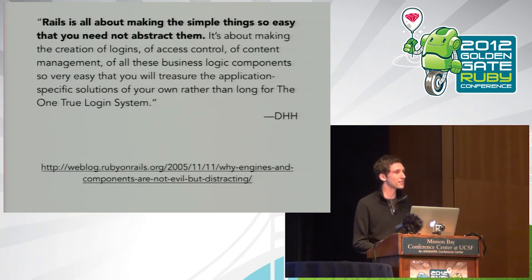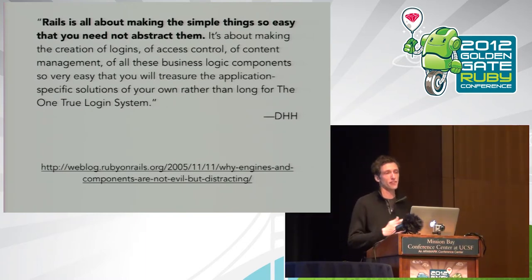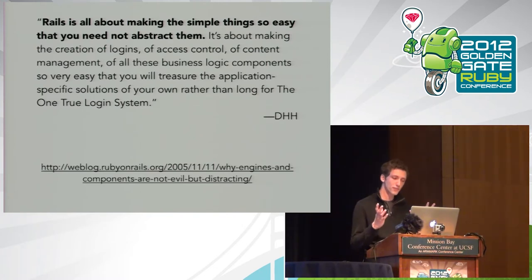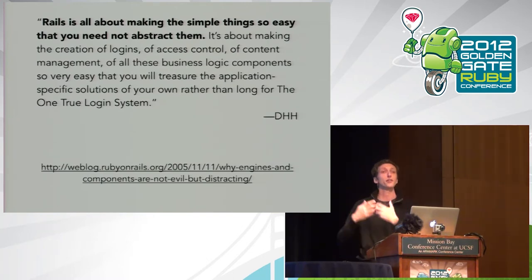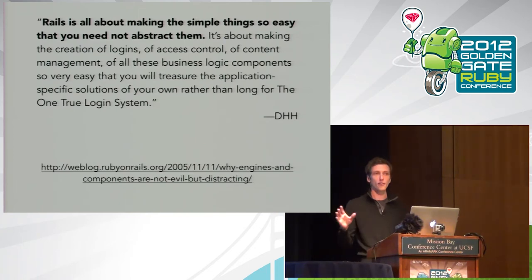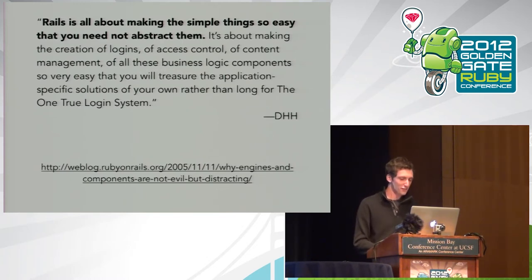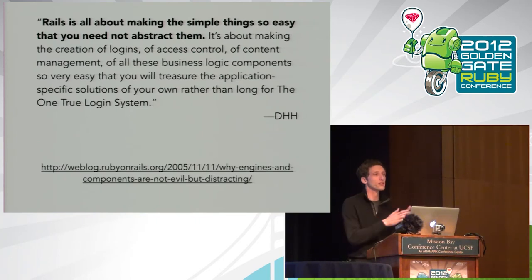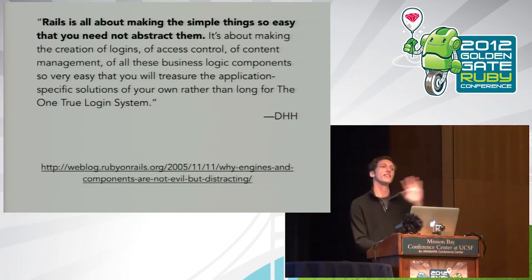He's basically making an argument against the way we do Rails development today — bringing in components like OmniAuth or Devise for authentication, or CMSs like Radiant or Refinery. DHH didn't think this was the right path for Rails. He thought you should build application-specific solutions. The title of the blog post from the URL: 'Why engines and components are not evil but distracting.'